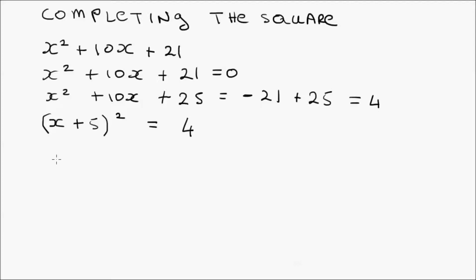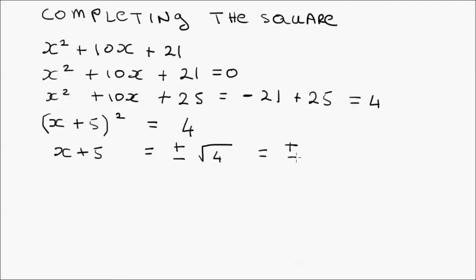If we take the square root of each side, it gets rid of the squared, and we get the square root of 4, which is 2. So x plus 5 equals positive and negative 2.